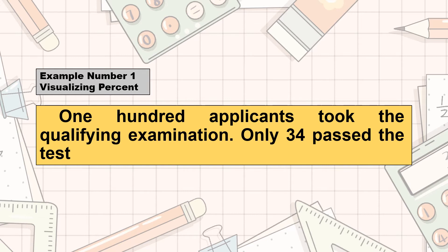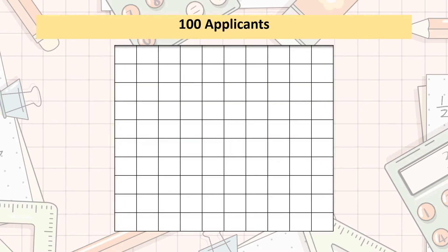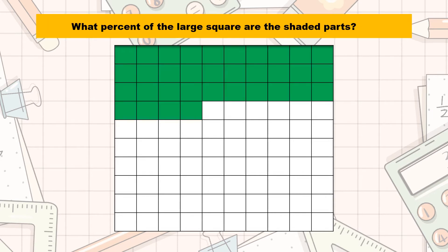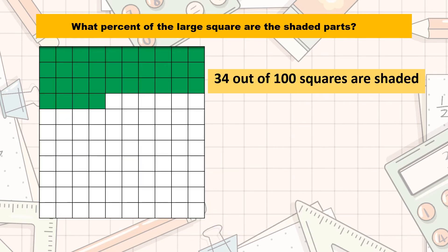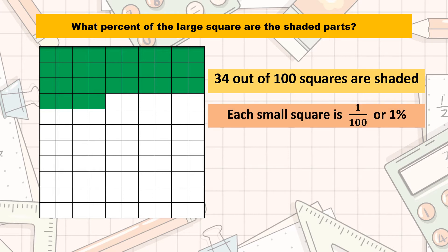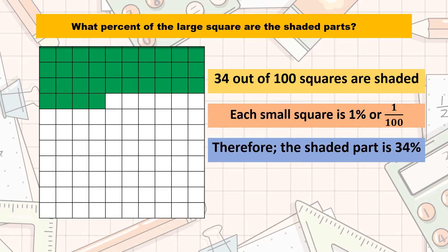For example number 1, 100 applicants took the qualifying examination, but only 34 applicants passed the test. The applicants are represented in the figure wherein the large square is divided into 100 small squares. What percent of the large square are the shaded parts? 34 out of 100 small squares are shaded. These shaded squares represent those who passed the test. Each of the smaller squares is 1 over 100, or 1% of the large square. Therefore, the shaded part is 34% of the large square.